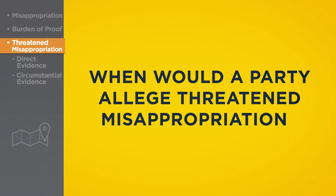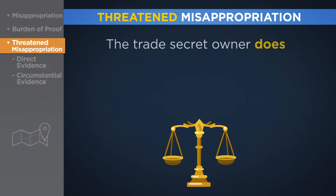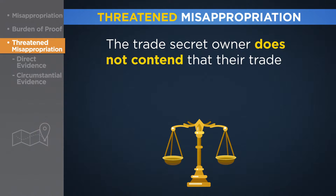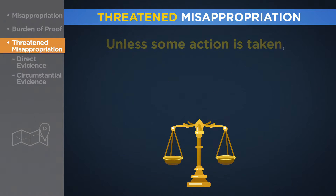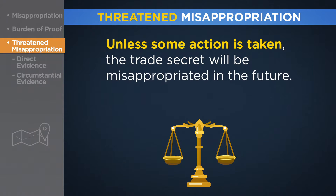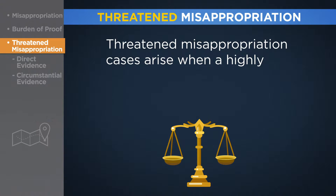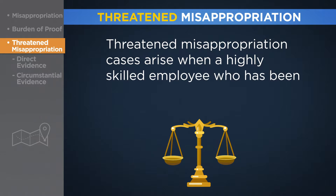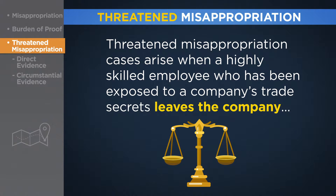When would a party allege threatened misappropriation? In cases of alleged threatened misappropriation, the trade secret owner does not contend that their trade secrets have already been misappropriated, but rather that unless some action is taken, their trade secrets will be misappropriated in the future. Such cases often arise when a highly skilled or trained employee who has been exposed to a company's trade secrets leaves the company and goes to work for a competitor.